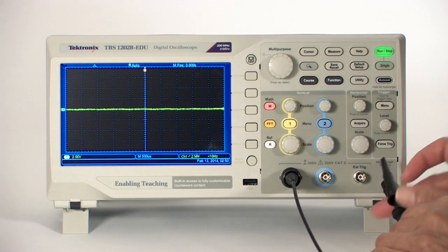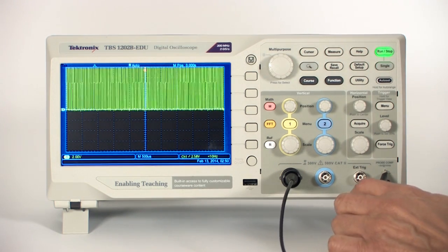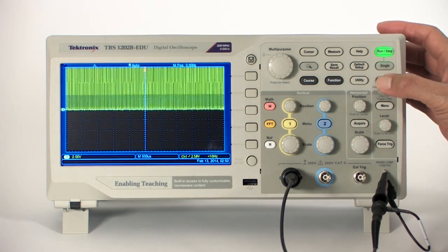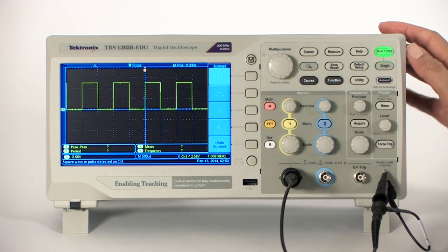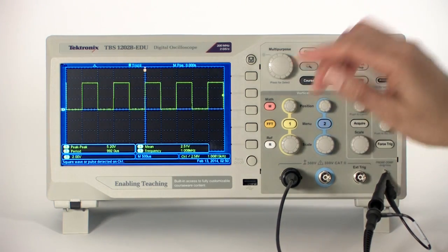For this video, we'll make measurements on the calibration output of the scope. To get a stable waveform, I'll use the Autoset function, which also performs a series of automatic measurements as soon as it finishes analyzing the waveform. We'll talk more about automatic measurements later.